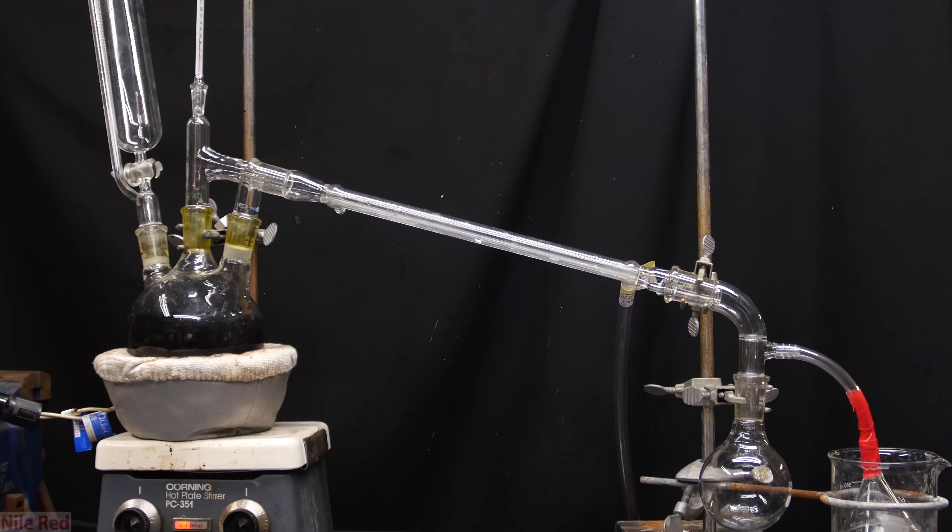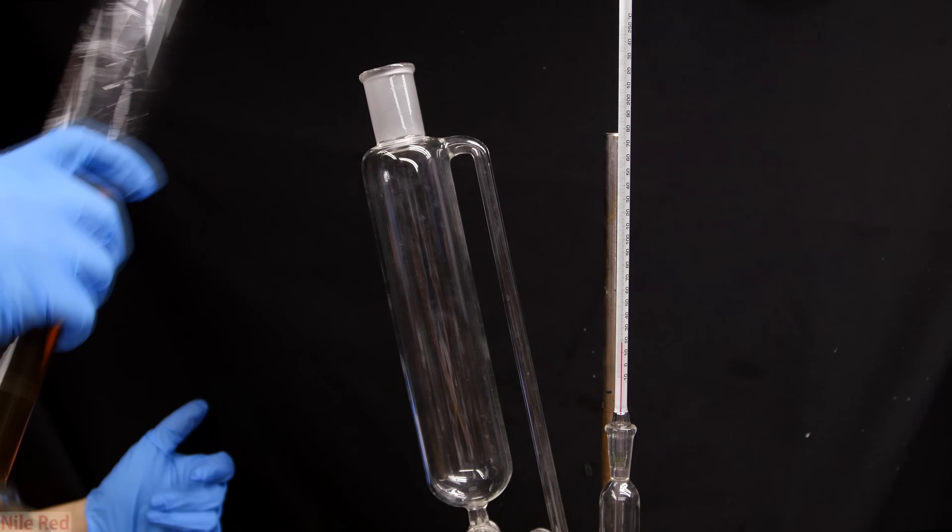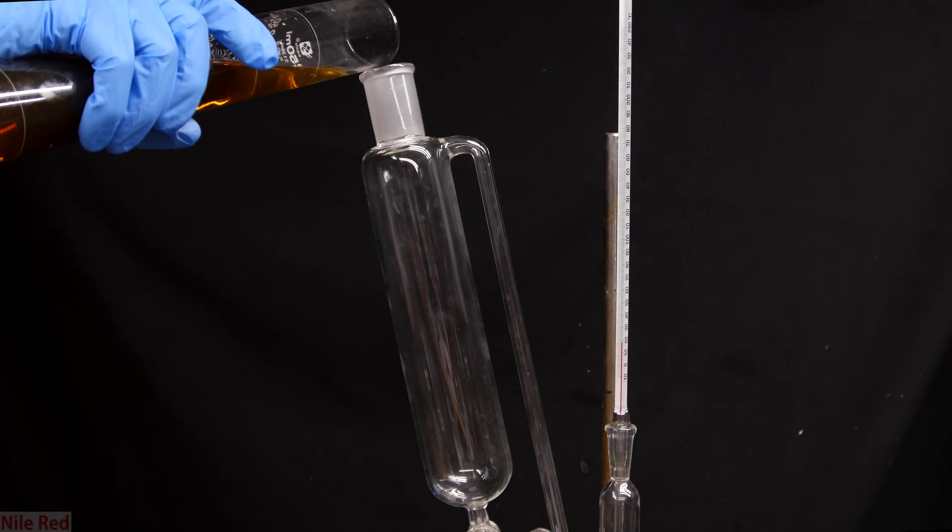This is what the apparatus looks with all of the joints sealed, and if you look to the left, you can see that there's an addition funnel attached. To the addition funnel is where we add the 186 milliliters of the drain cleaner.